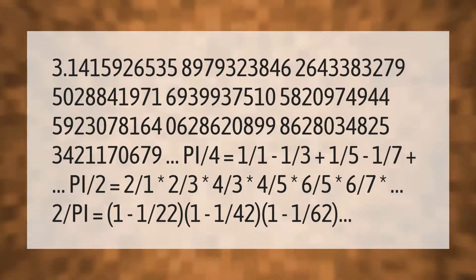3.1415926535897932384626433832795028841971693993751058209749445923078164062862089986280348253421170679... PI/4 = 1/1 - 1/3 + 1/5 - 1/7 + ... PI/2 = 2/1 * 2/3 * 4/3 * 4/5 * 6/5 * 6/7 * ... 2/PI = (1 - 1/22)(1 - 1/42)(1 - 1/62)...